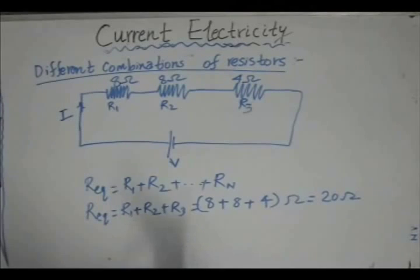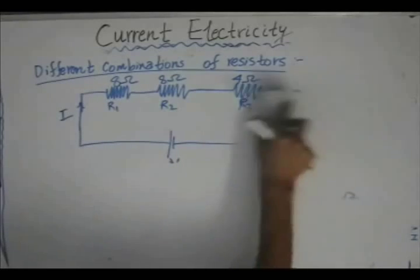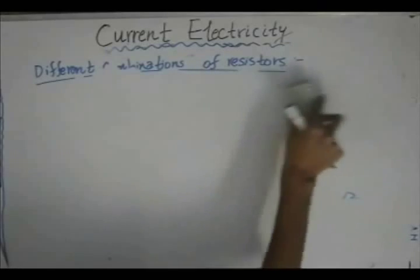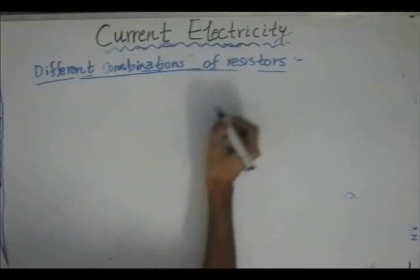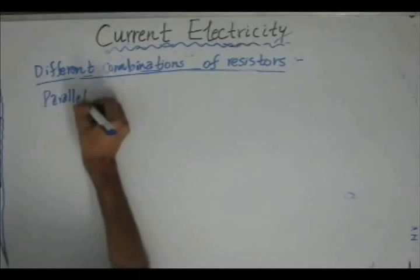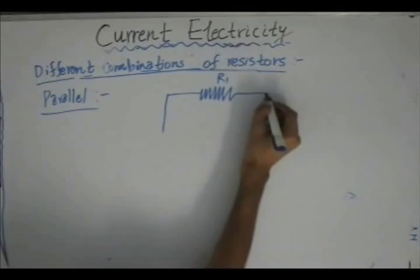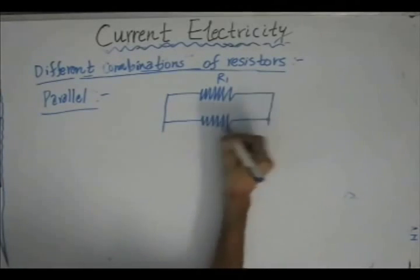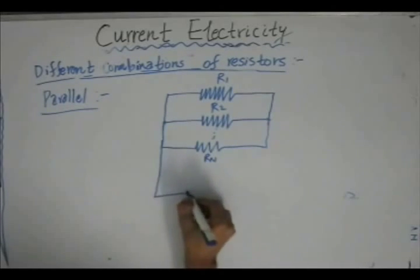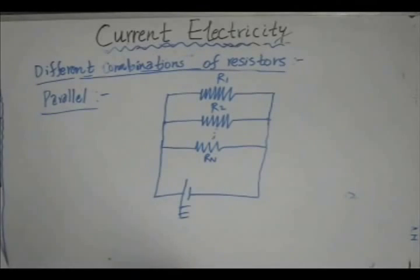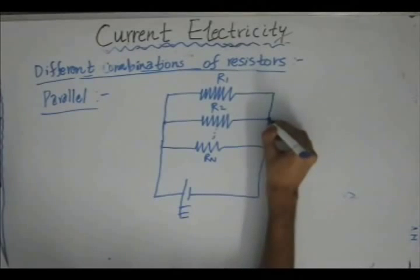Now let us move to the other combination — resistors connected in parallel. When resistors are connected in parallel, it implies that the potential or voltage across each of the resistors is the same. In the series connection the current was the same, but for parallel combinations we say that the potential drop across each of the n resistors is the same, with all connected to an external EMF source E.